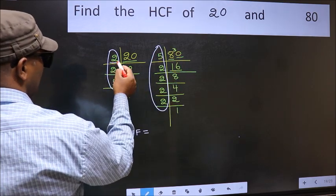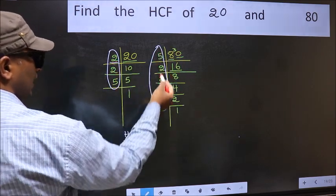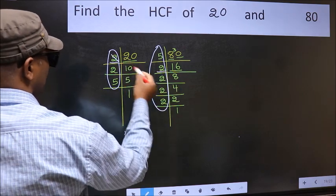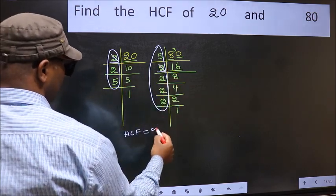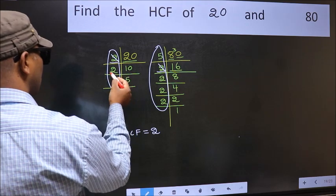So now let us find the numbers which should be present here and here. Starting with the number 2. Do we have 2 here? Yes.